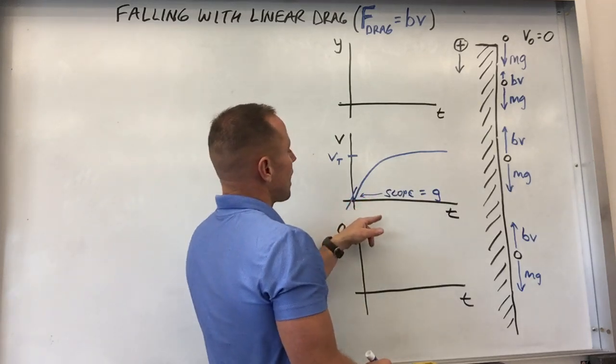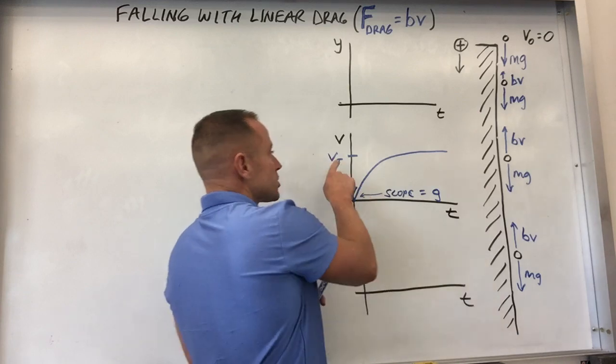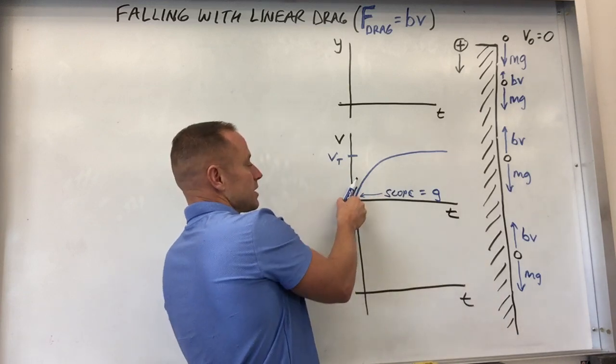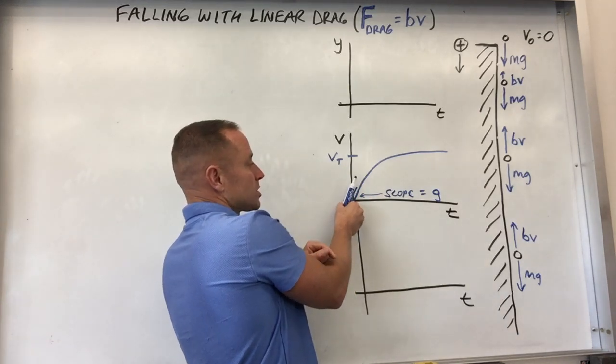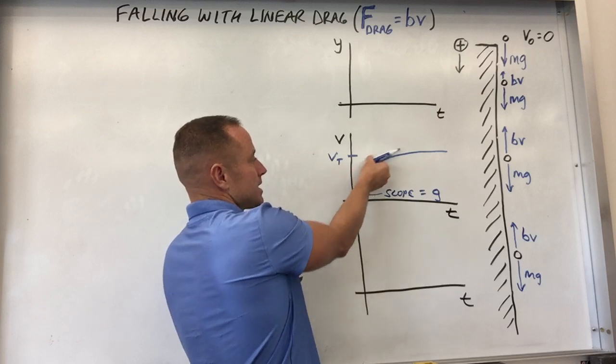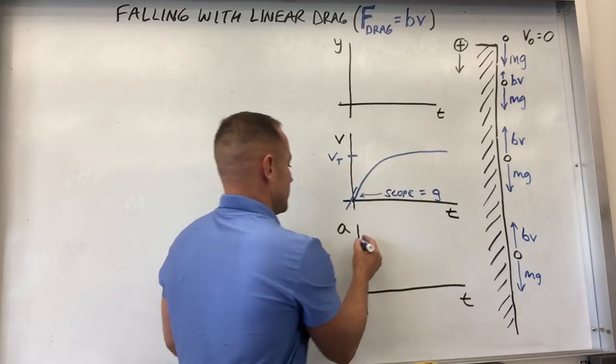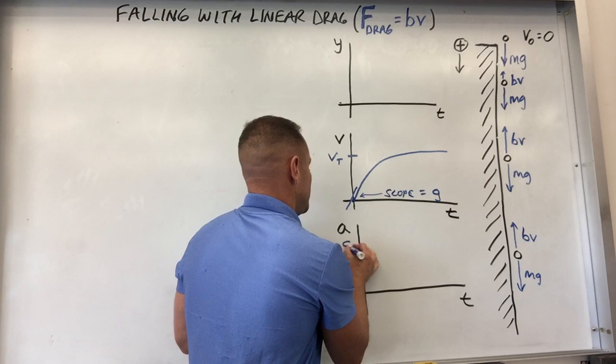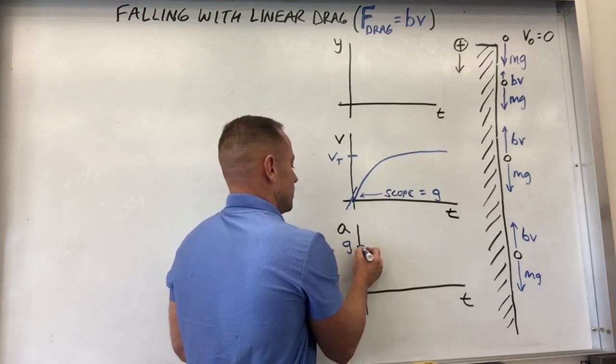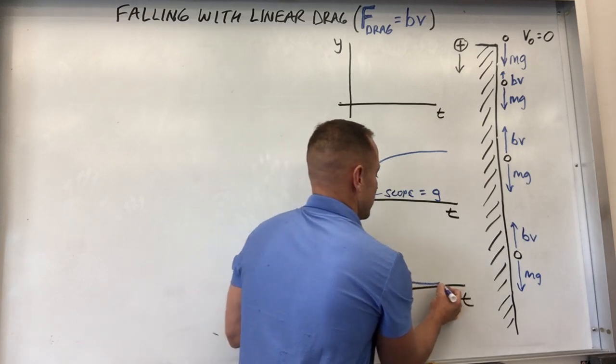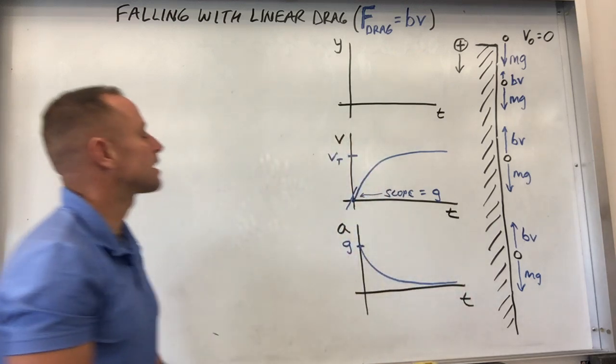If you graph the acceleration, which is the slope of the velocity, you can see the acceleration or the slope starts at g and then it just tends toward zero. So you start up here at g and then the acceleration just tends toward zero like this.